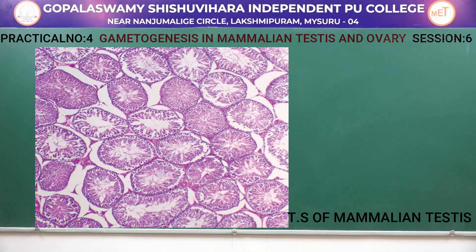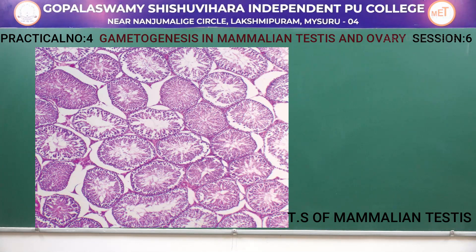Spermatogonia alternate with the Sertoli cells. These spermatogonia undergo spermatogenesis, which helps in the production of sperms, whereas the Sertoli cells provide nourishment for the developing sperms. A connective tissue called stroma contains Leydig cells, which secrete the hormone called testosterone.